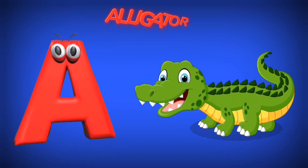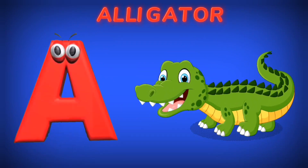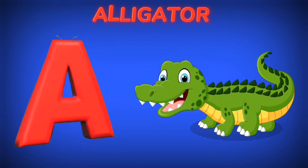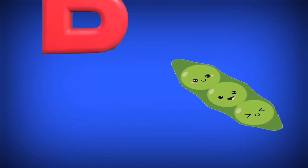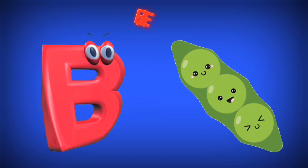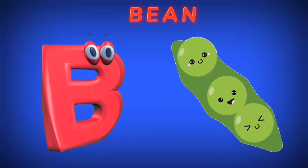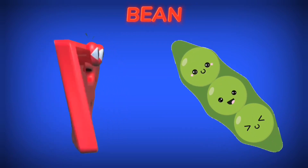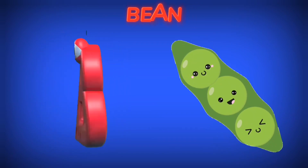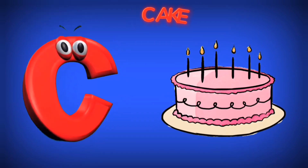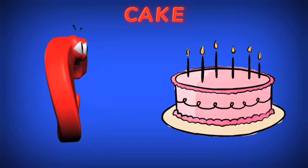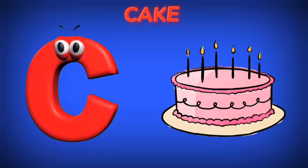A is for Alligator. A, A. B is for Bean. B, B. C is for Cake. C, C.